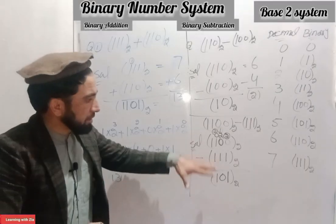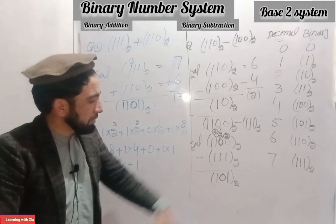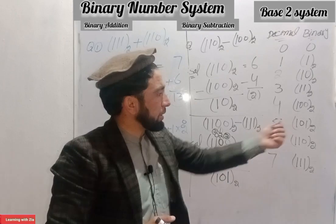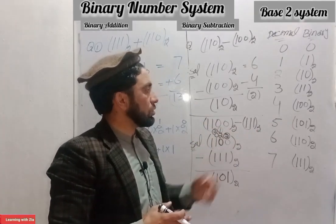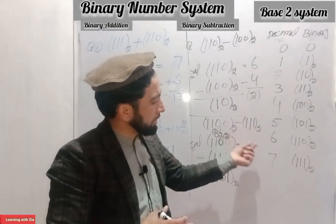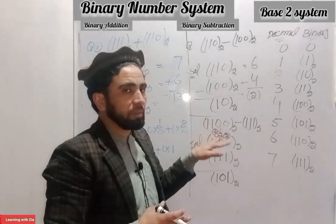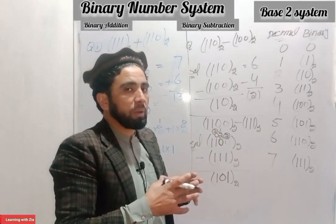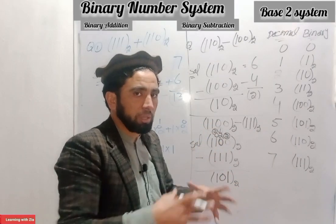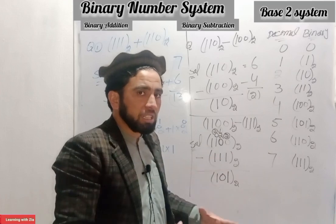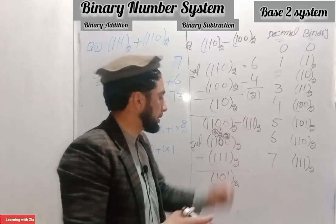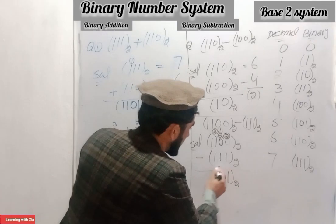The result of 1100 minus 111 is 101. 101 in decimal is 5. And 1100 is 12, so 12 minus 7 equals 5. The decimal system verification confirms the number is 5. So the result is 5, verified through the decimal system.